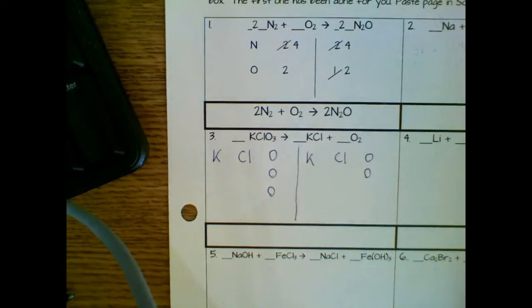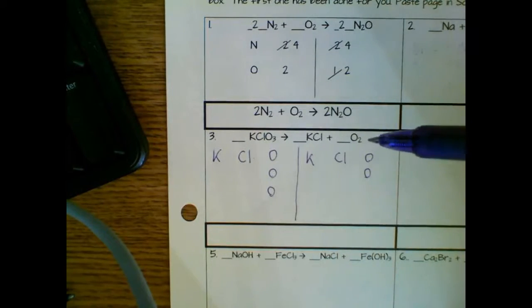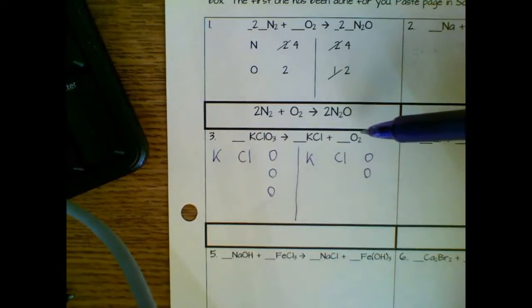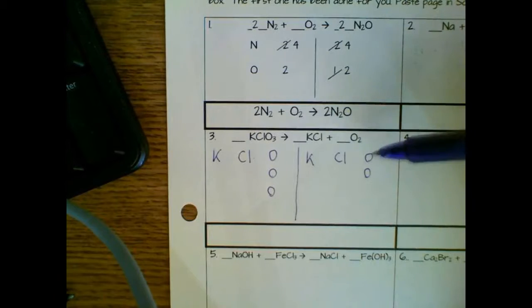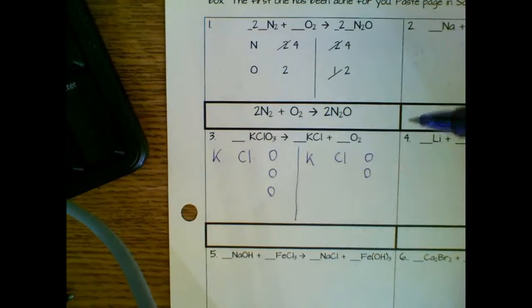So the first step of balancing a chemical equation is to figure out what number you need to put in place to balance out whatever's unbalanced. In this case, that's definitely the O's. The only place that I could put a number to fix that is going to be right here for my O2 because I have too few. So you want to start on the side that you have too few.